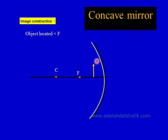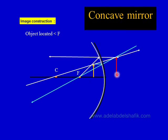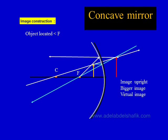If the object is located closer than f, a parallel ray reflects through f, a ray through f comes out parallel, and a ray perpendicular to the surface reflects through c. These rays, when extended, meet behind the mirror, giving a virtual image that is erect. A virtual image cannot be captured on a screen.